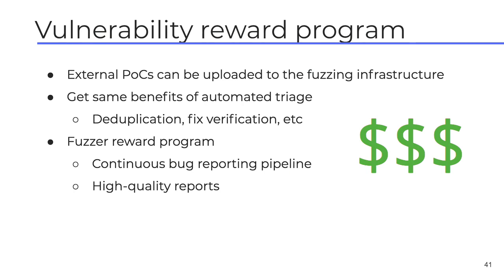You can plug in your external reports from a vulnerability rewards program into the fuzzing infrastructure itself, which gives you automated deduplication and fix verification for free. We've also taken it further by hosting a fuzzer reward program — instead of a reporter running their fuzzer once on a single machine, we run it continuously at scale on our cloud, resulting in much higher quality reports in the bug tracker. We have reporters who submitted fuzzers years back that are still finding new vulnerabilities because code regresses over time, and they get paid automatically.